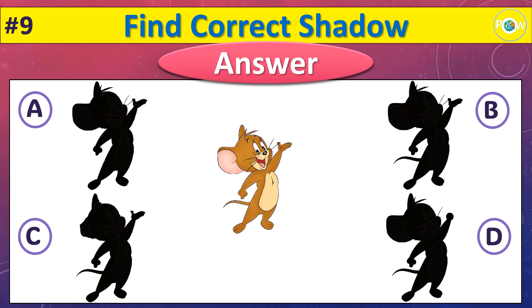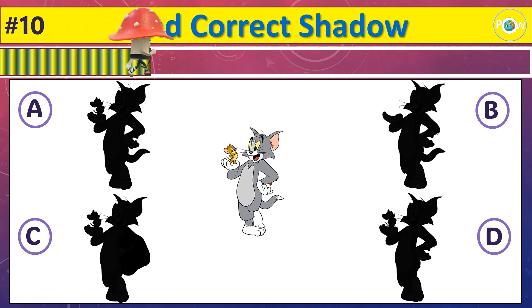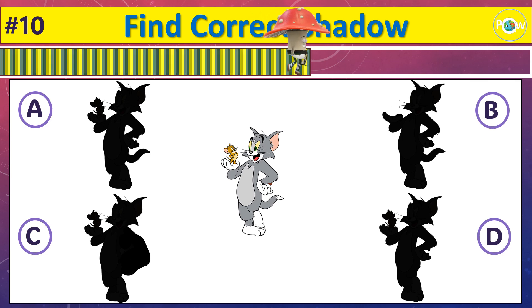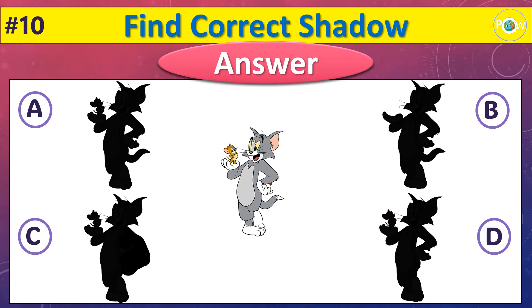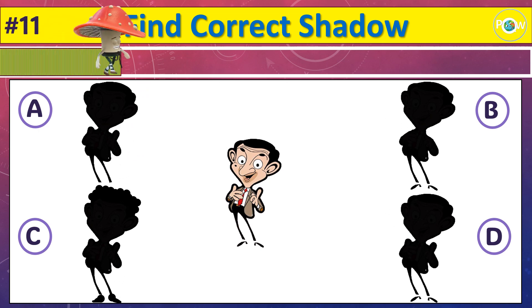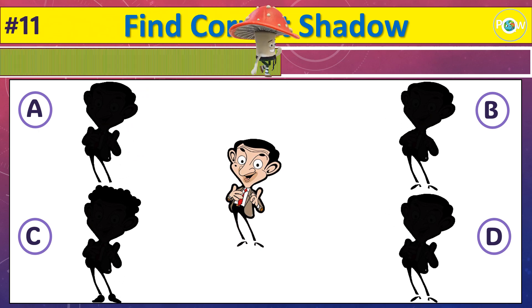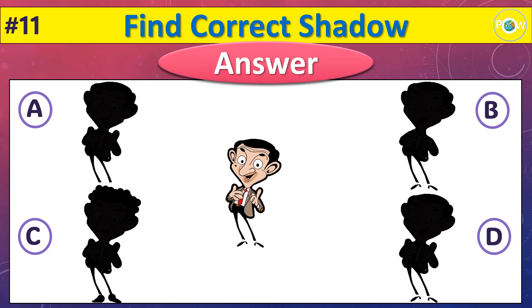And the correct shadow is B. And the correct shadow is B. And the correct shadow is B. And the correct shadow is A. And the correct shadow is A. Time up. And the correct shadow is D.